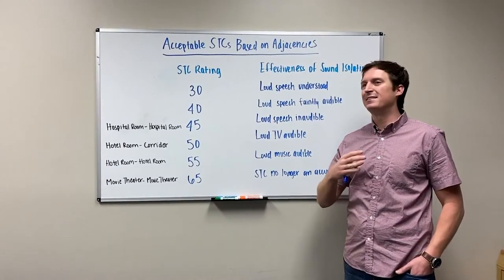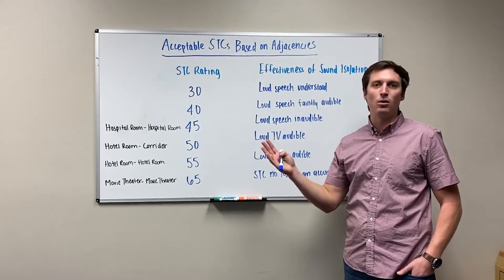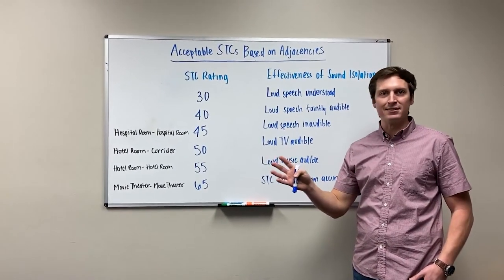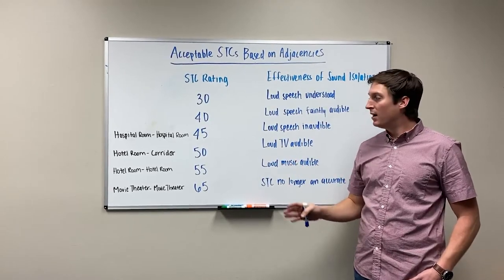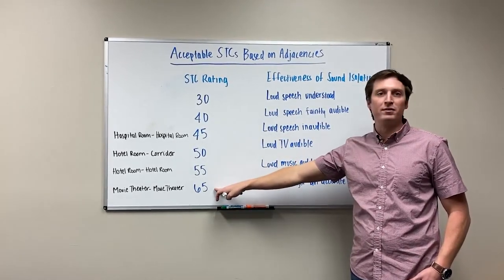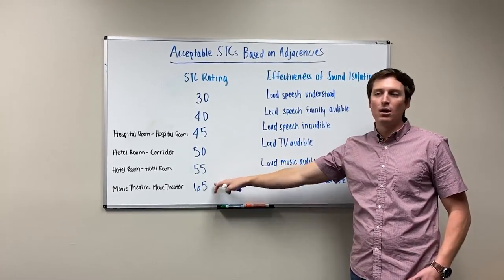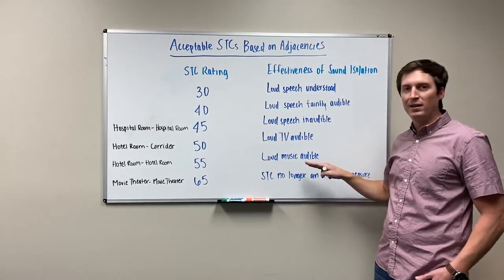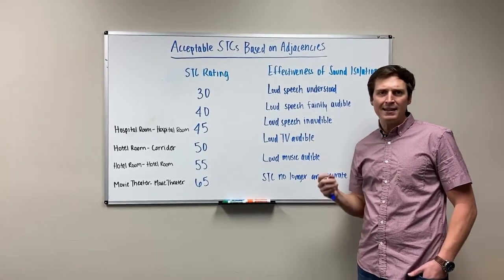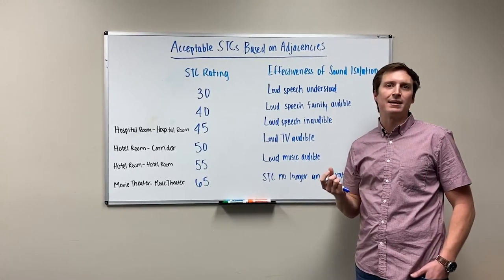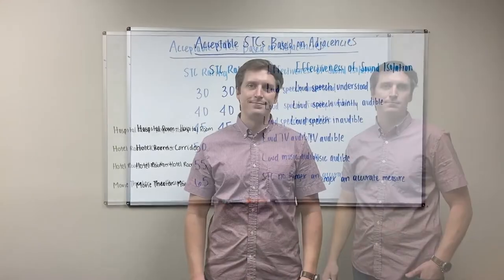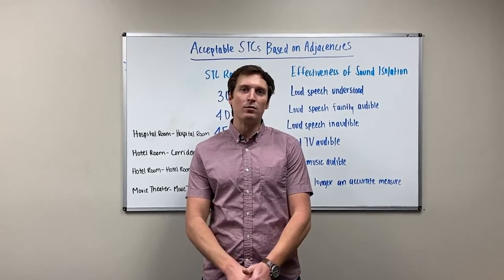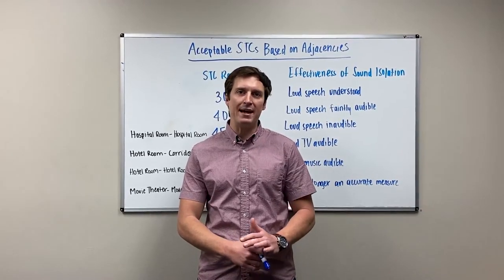All the time architects and contractors are asking for an STC 70 wall — it really doesn't exist. You would need 12-inch thick stainless steel with an air gap to get there. 65 or higher is reserved for movie theaters. What you want is to set your target STC based on what level of privacy you need, and then ensure that your wall design actually achieves that target.